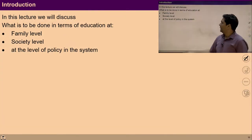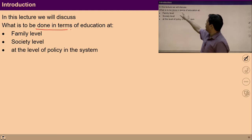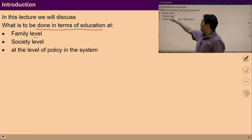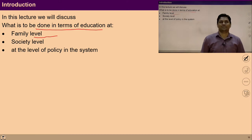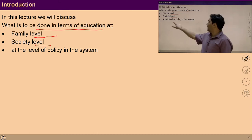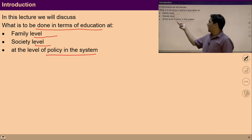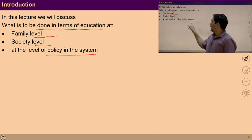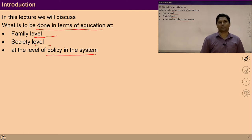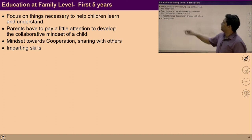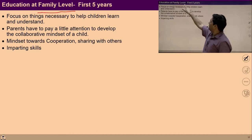In this lecture we are basically going to discuss what is to be done in terms of education at the level of family, at the level of society, and at the level of policies in the system. We will see what is required to spread education at each of these levels. Let's see them one by one, starting with the family level.